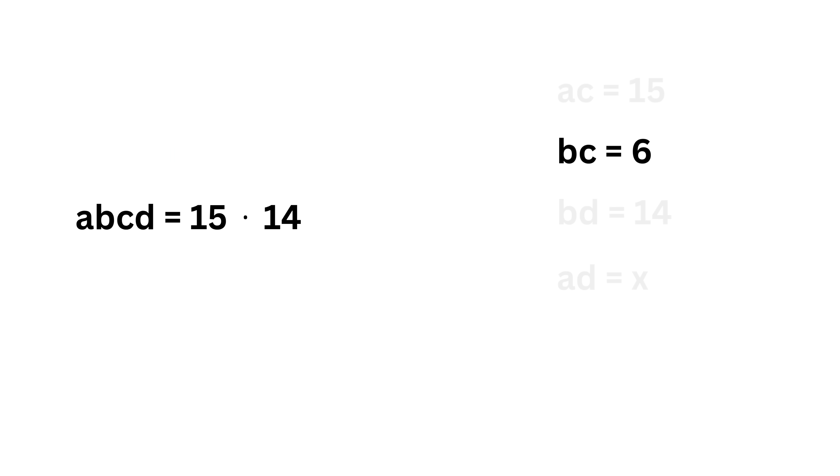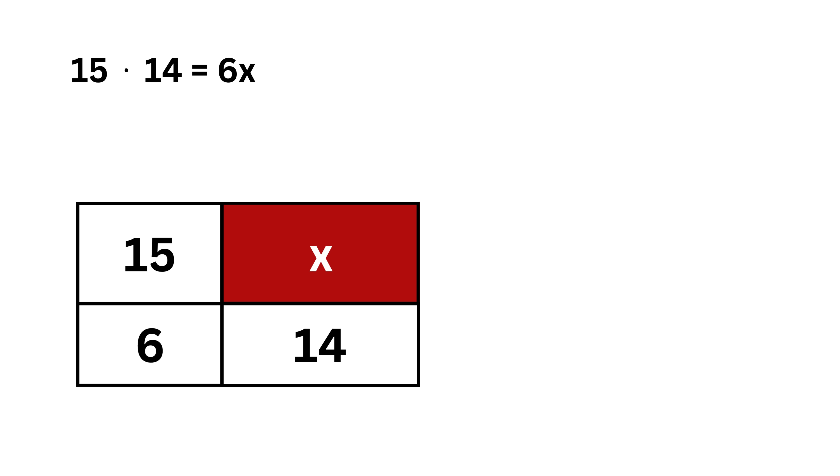Next, multiply this equation with this equation. We get BC times AD equals 6 times X. So this also gives A times B times C times D equals 6 times X. But both of them represent the same quantity. So we can equate them. 15 times 14 equals 6 times X. Now to solve for X, divide by 6 on both sides to get X equals 15 times 14 over 6.